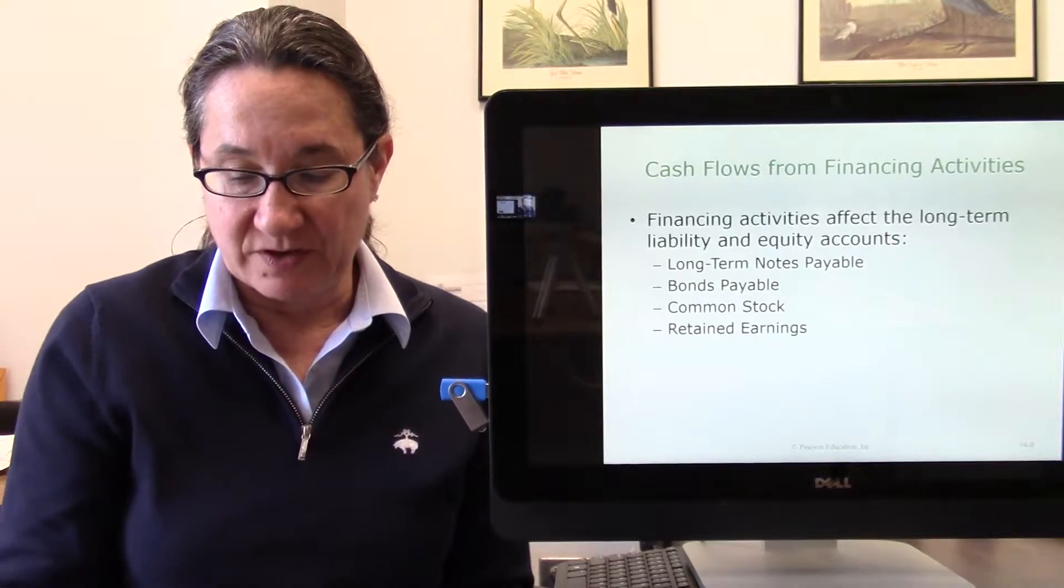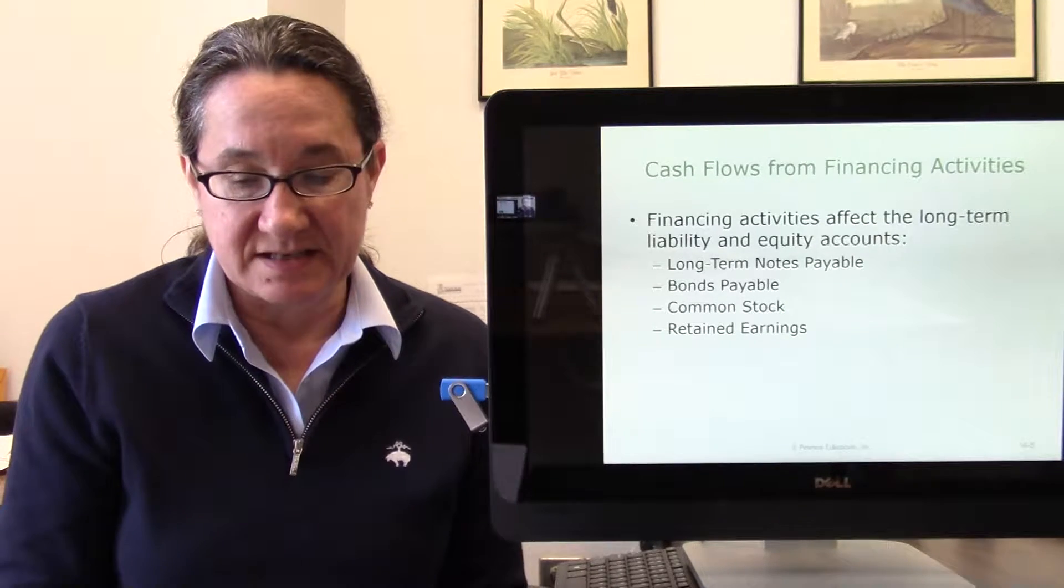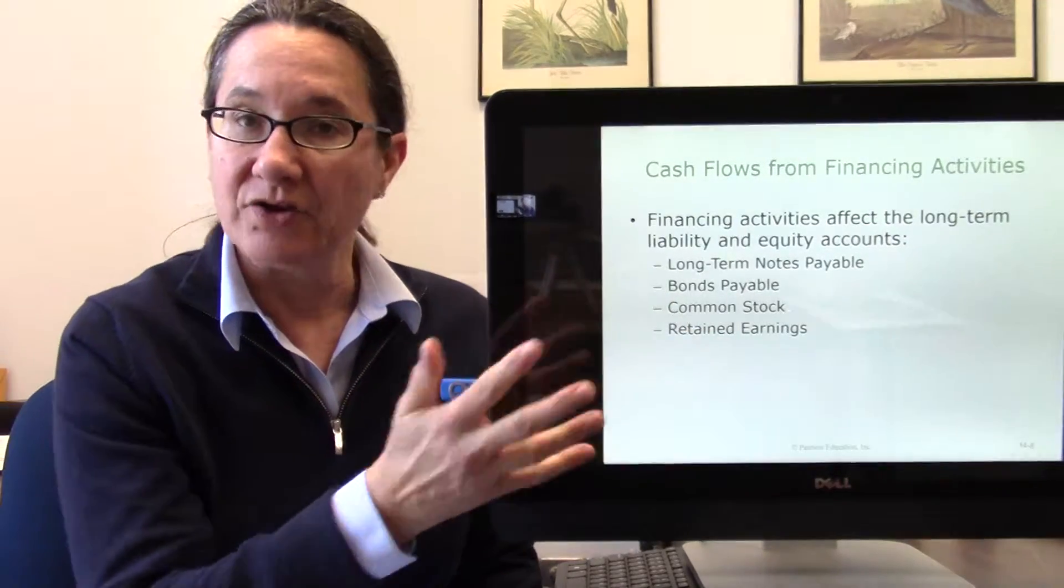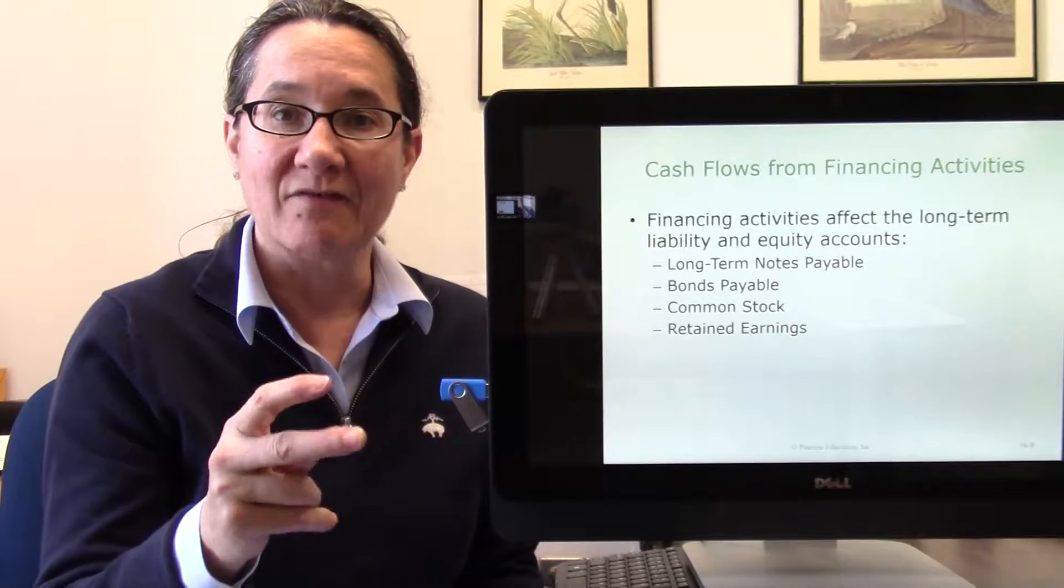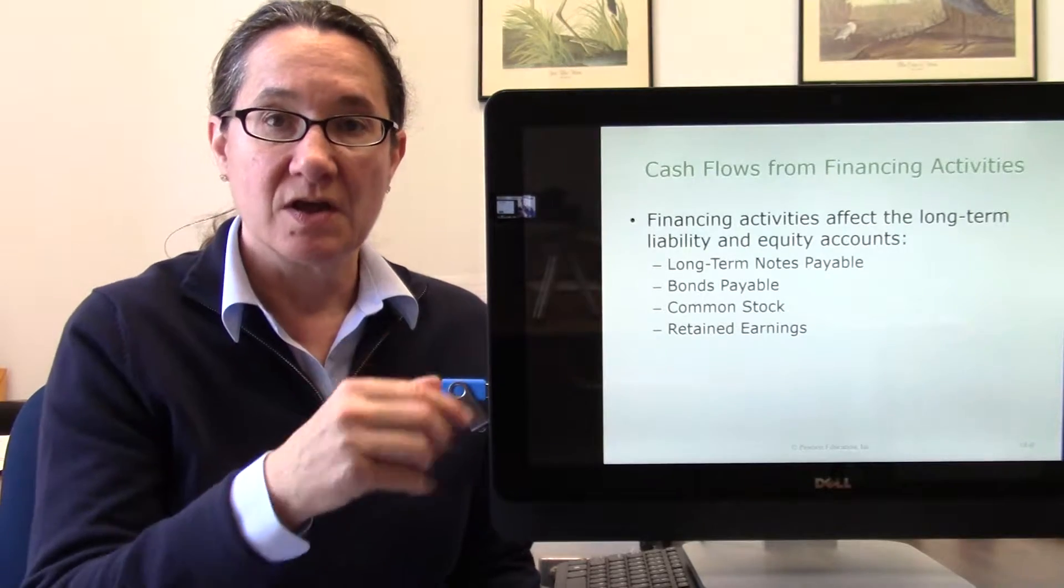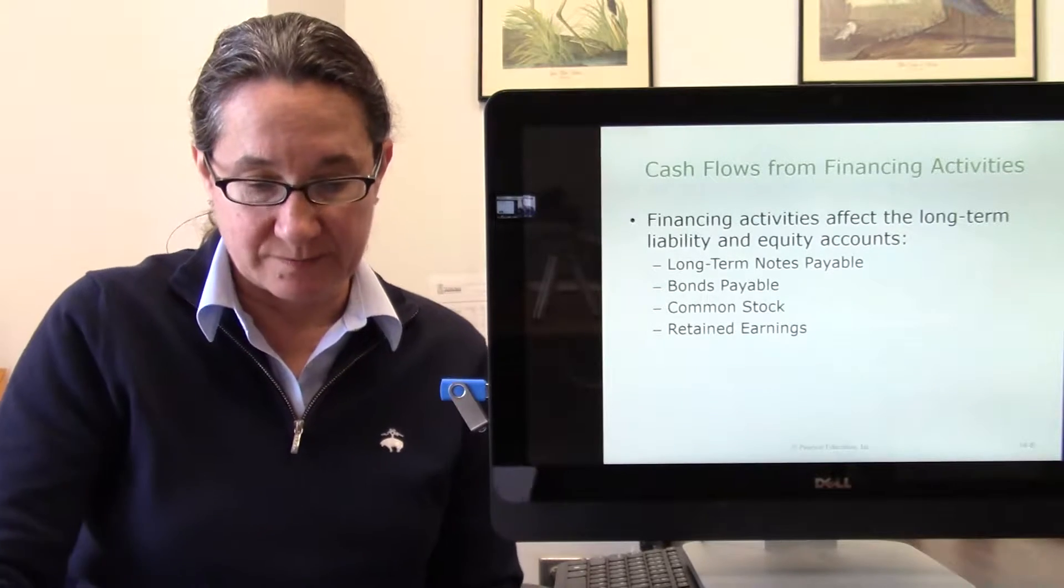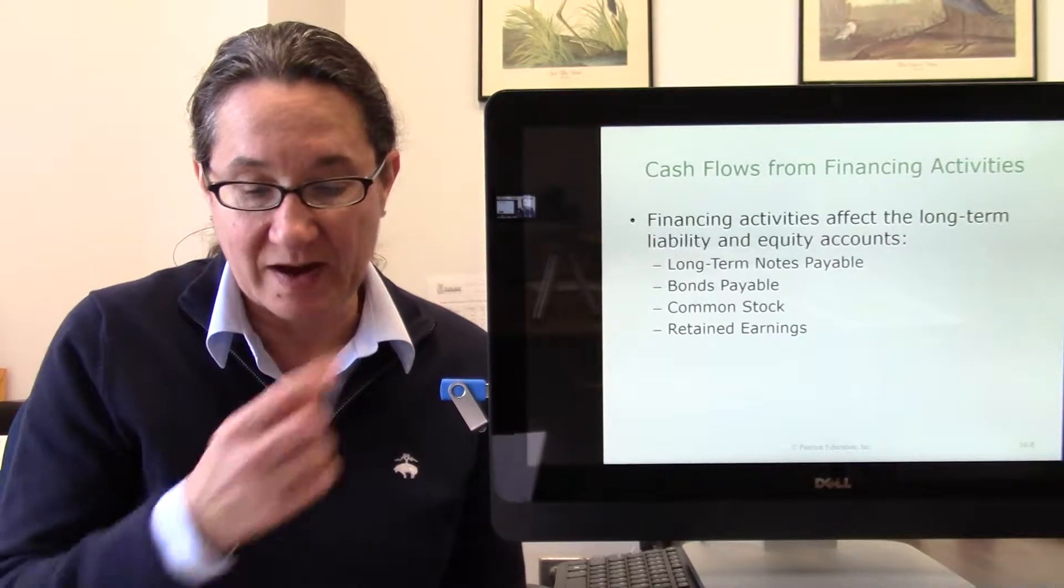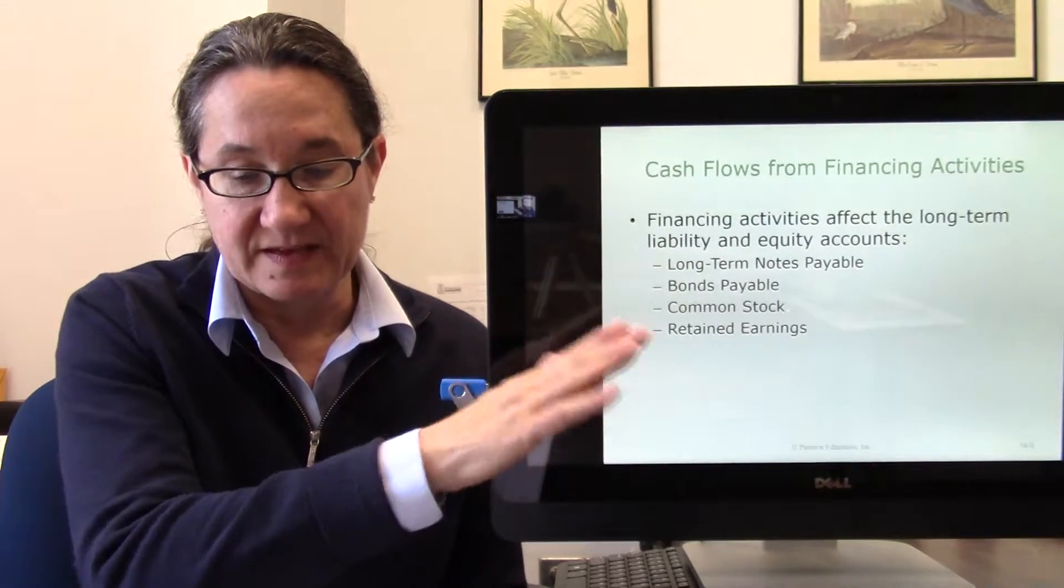Then there's another section called cash flows from financing activities. Financing activities affect the long term liability and equity accounts. Financing activities are how you finance the business, whether you borrow money like using bonds or notes payable, or whether you have owners invest paid in capital through stocks, common or preferred. However you're getting your financing, that goes in this section of the cash flow statement. Financing activities affect long term notes payable, bonds payable, common stock, retained earnings.